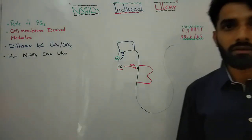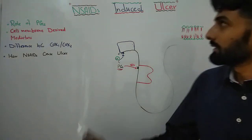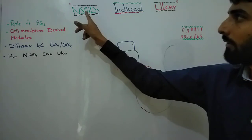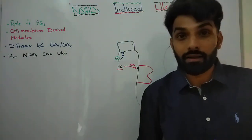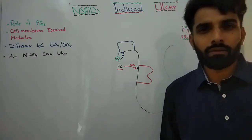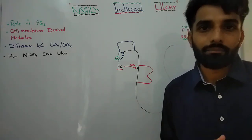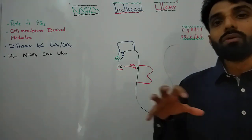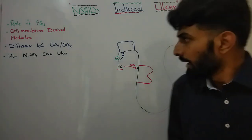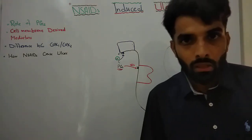Hello friends, my name is Rizwan Afees. In this video we will talk about NSAID-induced gastric ulcer. NSAIDs are basically a class of drugs — non-steroidal anti-inflammatory drugs. They include aspirin, ibuprofen, diclofenac, and celecoxib. All these drugs may cause or induce ulcer. Today we will focus on the pathophysiology of ulcer induced by these drugs.